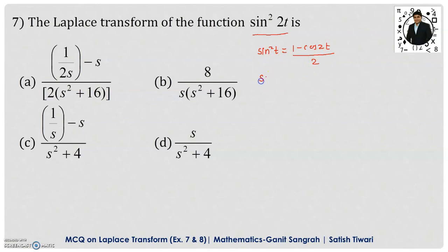Therefore, sin²(2t) can be written as (1 - cos(4t)) / 2, by replacing t with 2t in the formula. Now, take the Laplace transform of both sides.